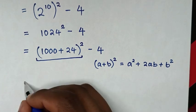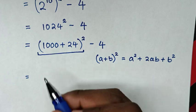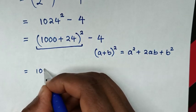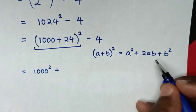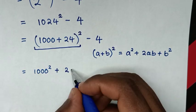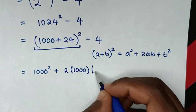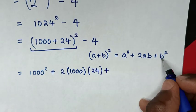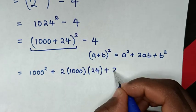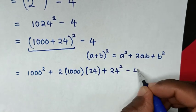Then it will be equal to a^2 is 1000^2, then plus 2ab is 2 times 1000 times 24, then plus b^2 is 24^2, then minus 4.